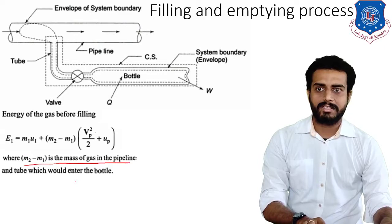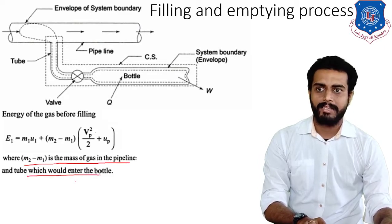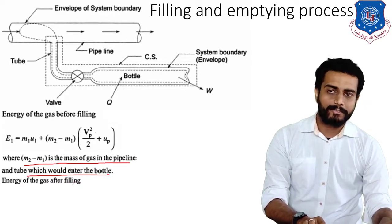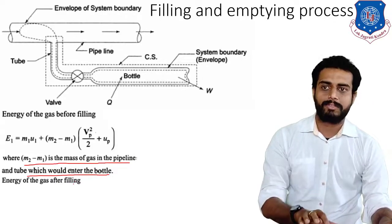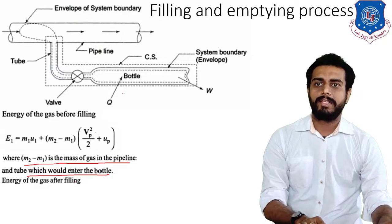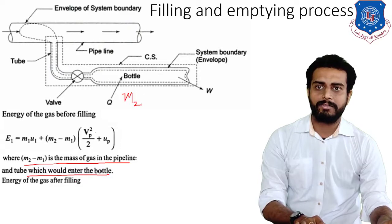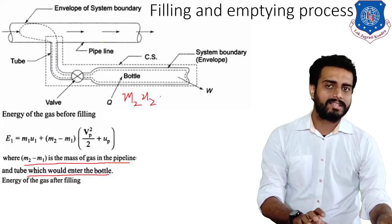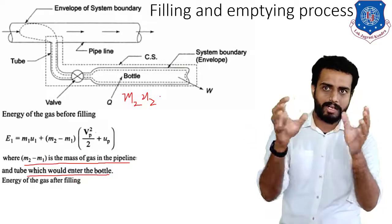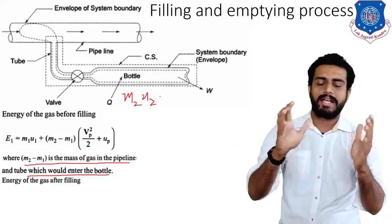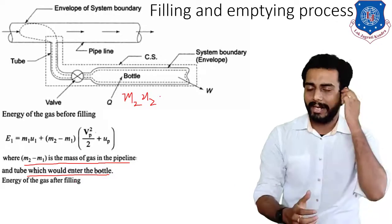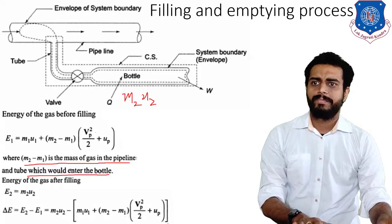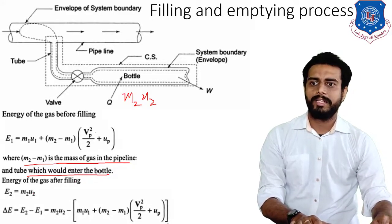M2 minus M1 is the mass of gas in the pipeline and the tube which would enter the bottle. Now, energy of the gas after filling: after completely filling the bottle, the mass will be M2 and the energy corresponding to that will be U2. The kinetic energy will be zero because the bottle is completely packed, and potential energy will also be zero. So E2 = M2·U2.